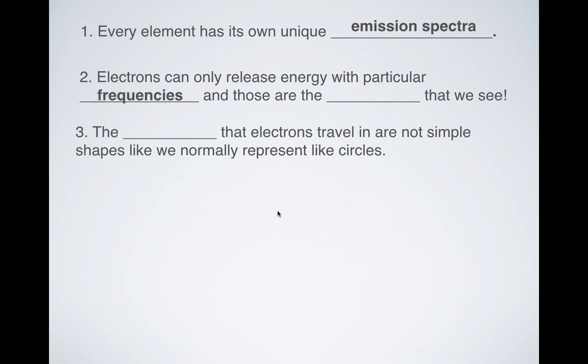Also, electrons can only release energies of particular frequencies. That's why we see those lines. It's not a continuous thing. It's just these nice little lines. And so that is going to be representative of the colors that we see.